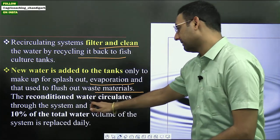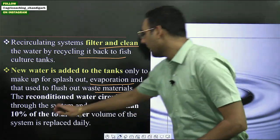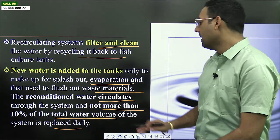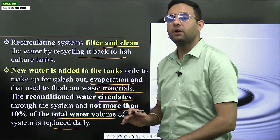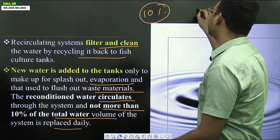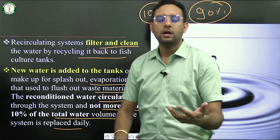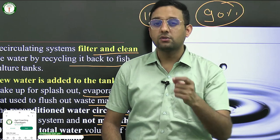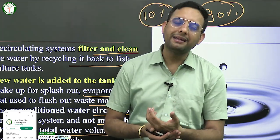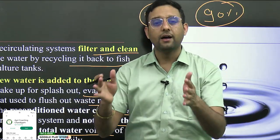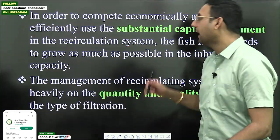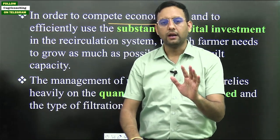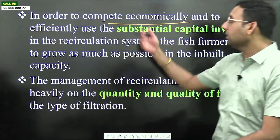Not more than 10 percent of total water volume is replaced daily — the remaining 90 percent is reused. So we are wasting minimum water, making RAS environmentally friendly as well. However, it is not cost-friendly — it is a capital-intensive system. But the high capital investment is offset by the ability to rear many more fish in a smaller area: a high-density intensive fish farming system.